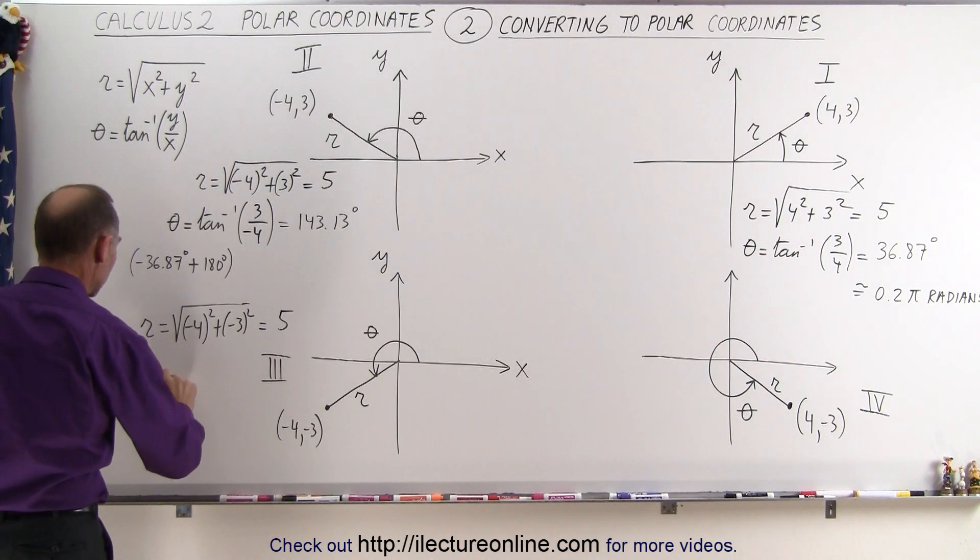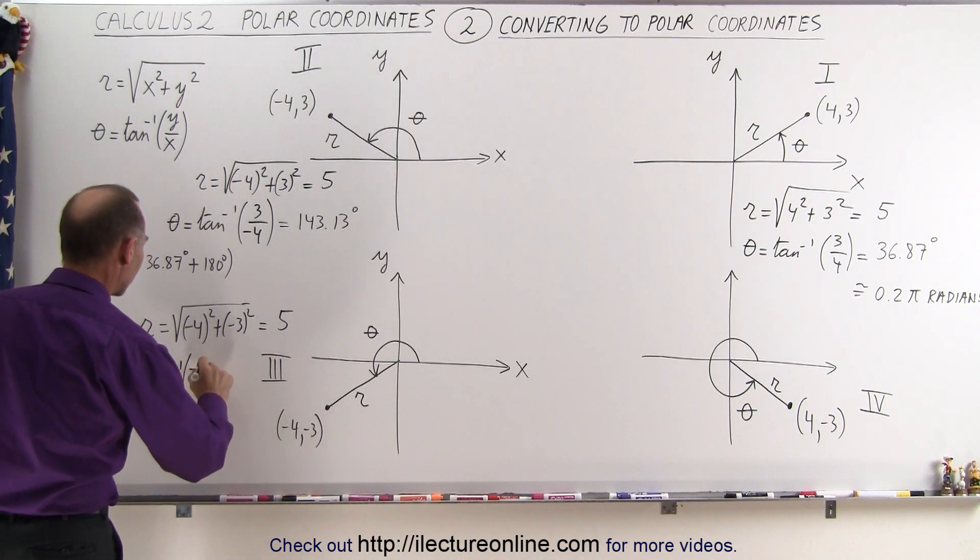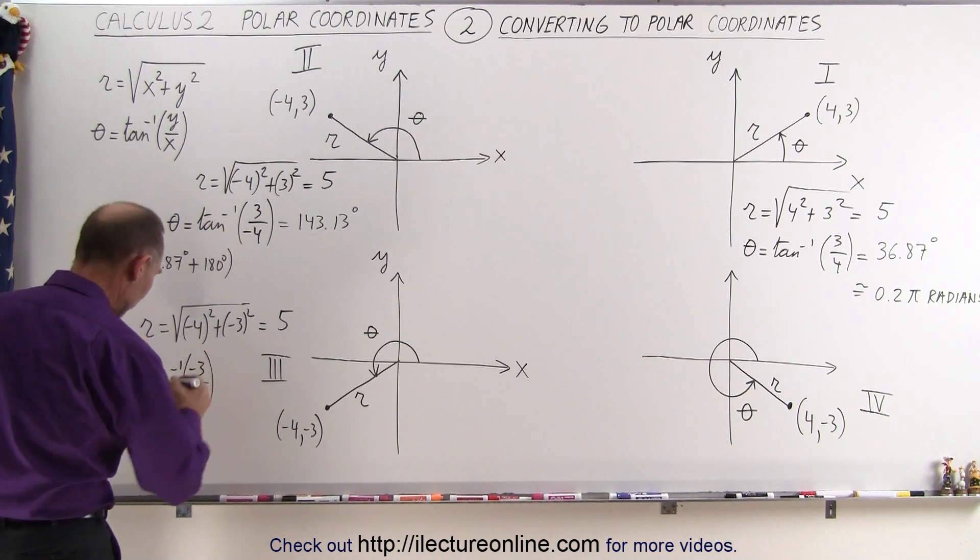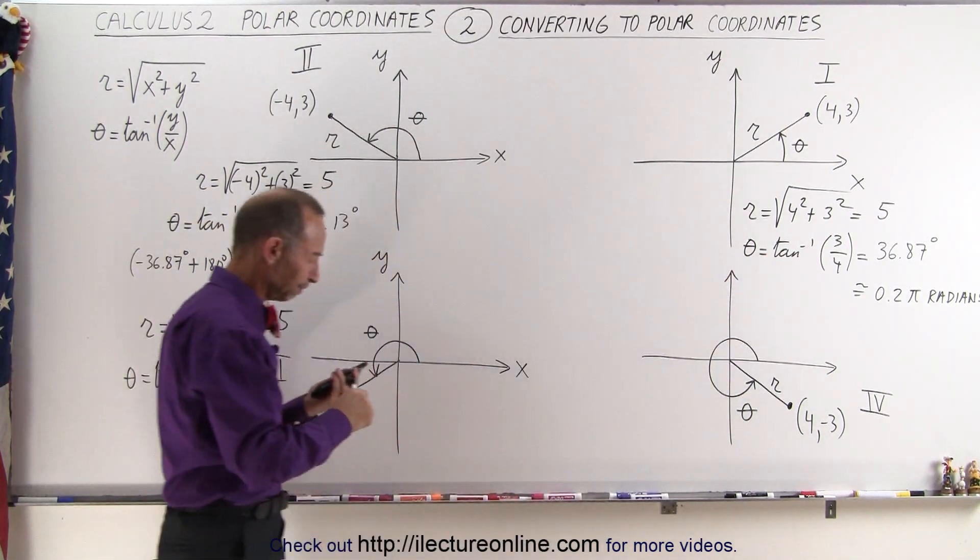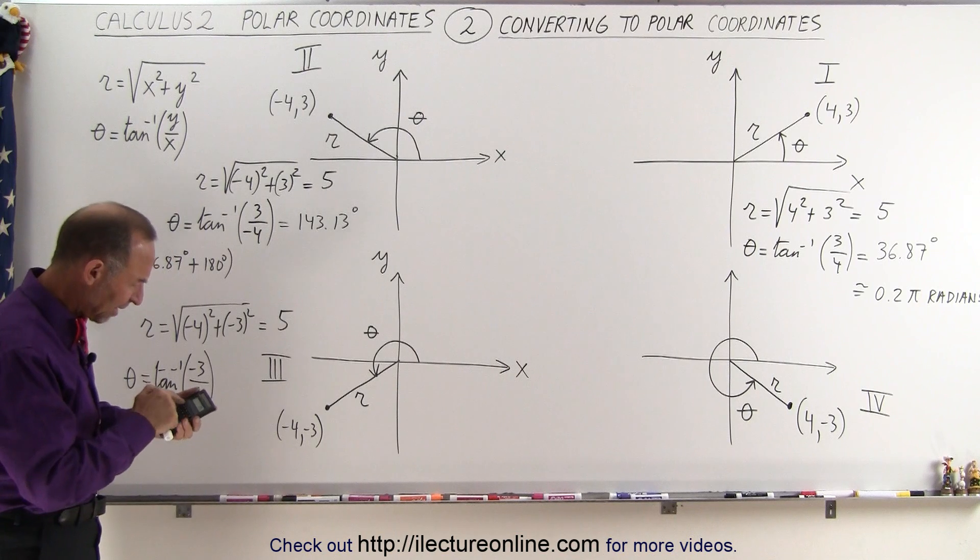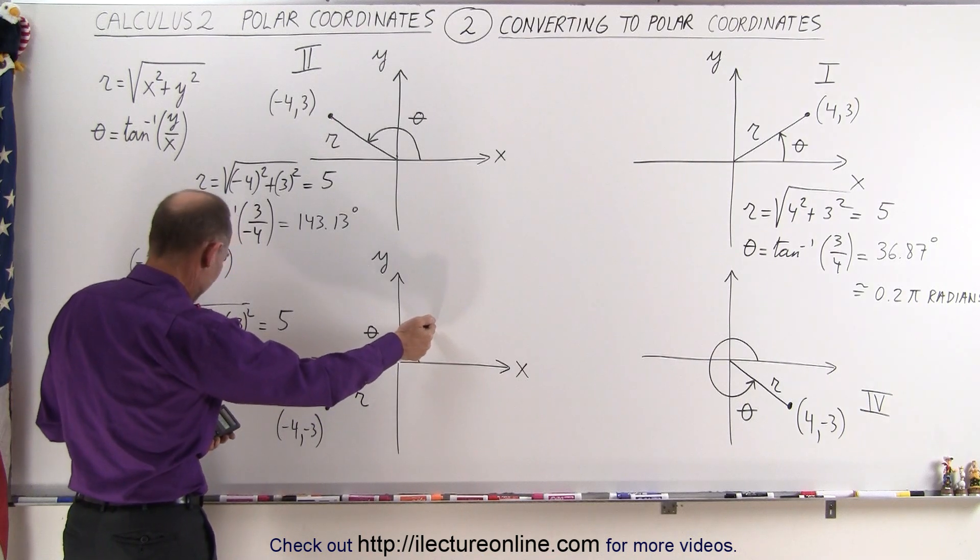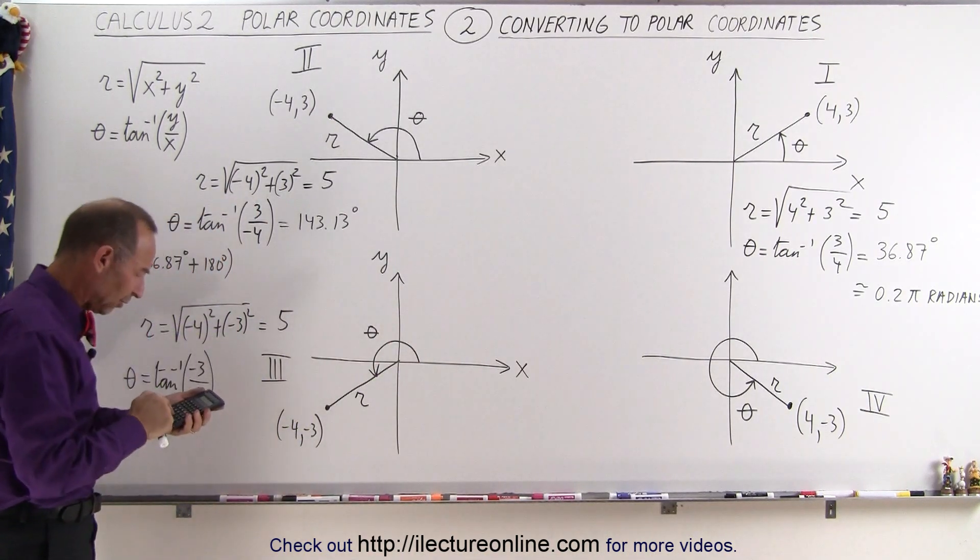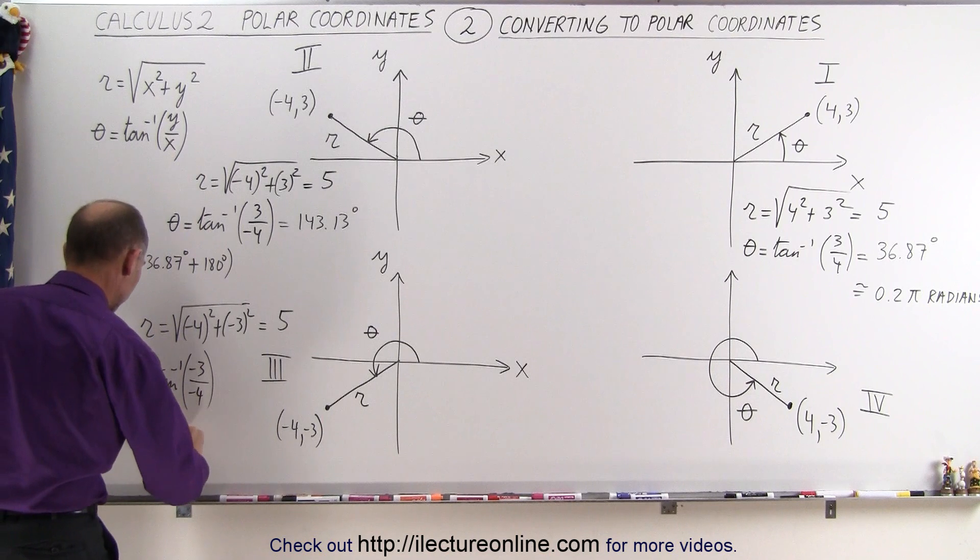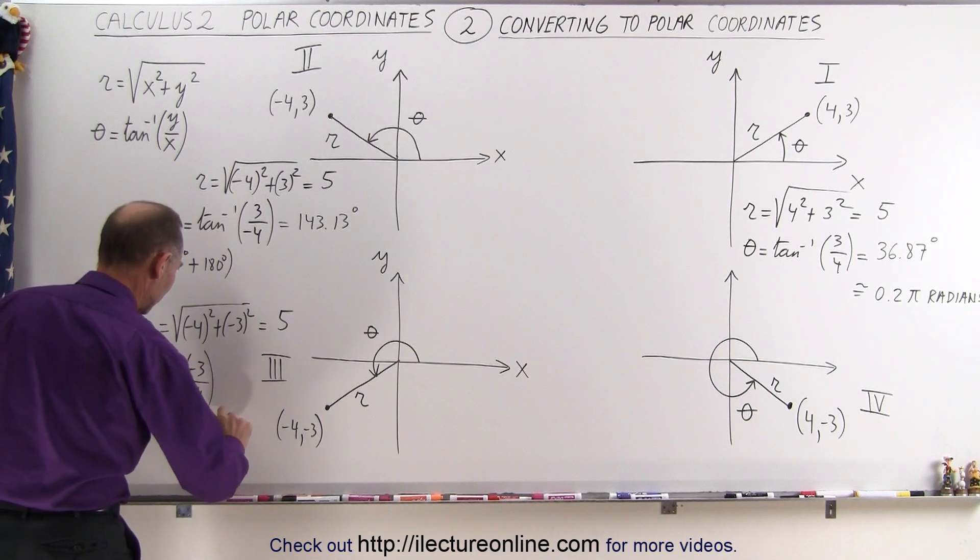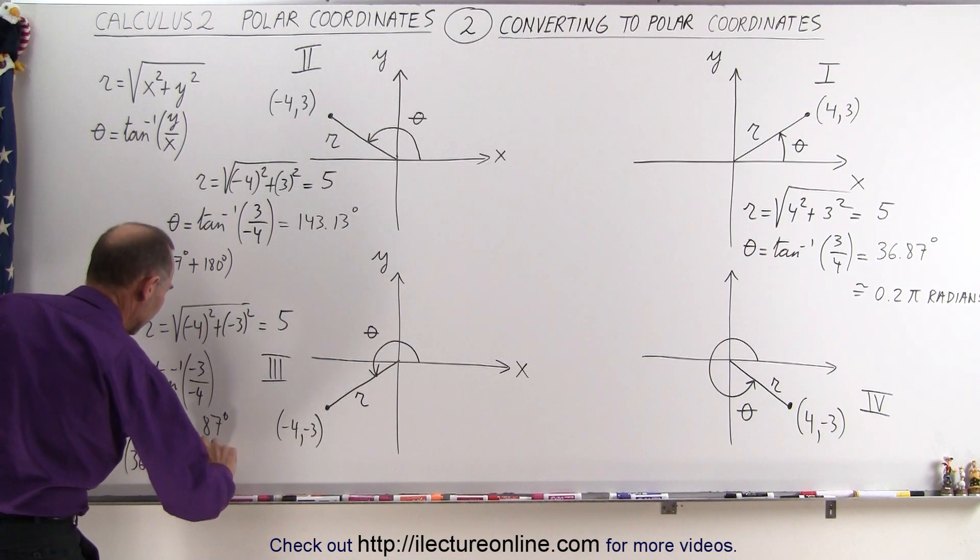Well, the angle theta is going to be equal to the inverse tangent of y over x. So in this case, we get y as being a minus 3 over x being a minus 4. Again, we get a positive value that gives us the inverse tangent of 3 over 4. So we get the same result that we have over there. So again, 0.75 to the inverse tangent. But again, we do know that it's not going to be 36.87 degrees. We have to add another 180 degrees, so plus 180 gives us 216.87 degrees. In other words, this was equal to 36.87 degrees plus 180 degrees.